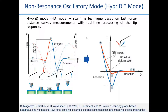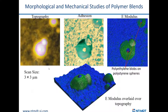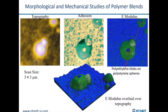This mode can also be used for morphology studies. Here is an example of a polymer blend — a matrix with spherical particles. Looking at the adhesion and E-modulus maps, we can understand that these islands have higher modulus, meaning we have a soft matrix with hard particles included. We can confirm this via direct measurement.